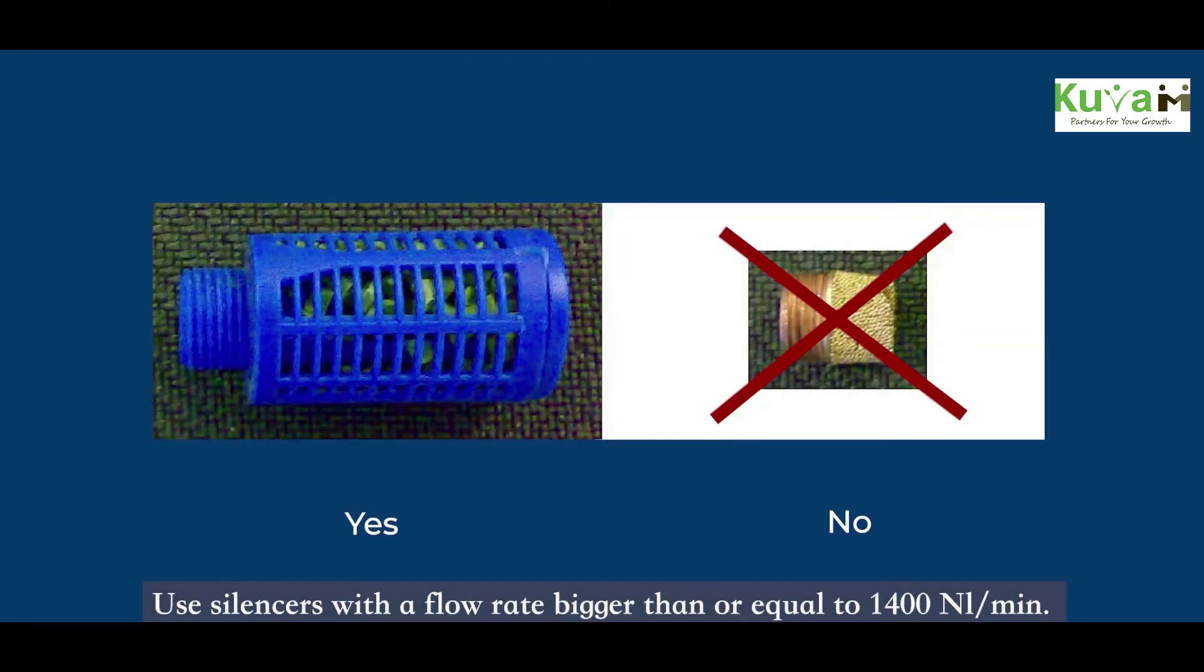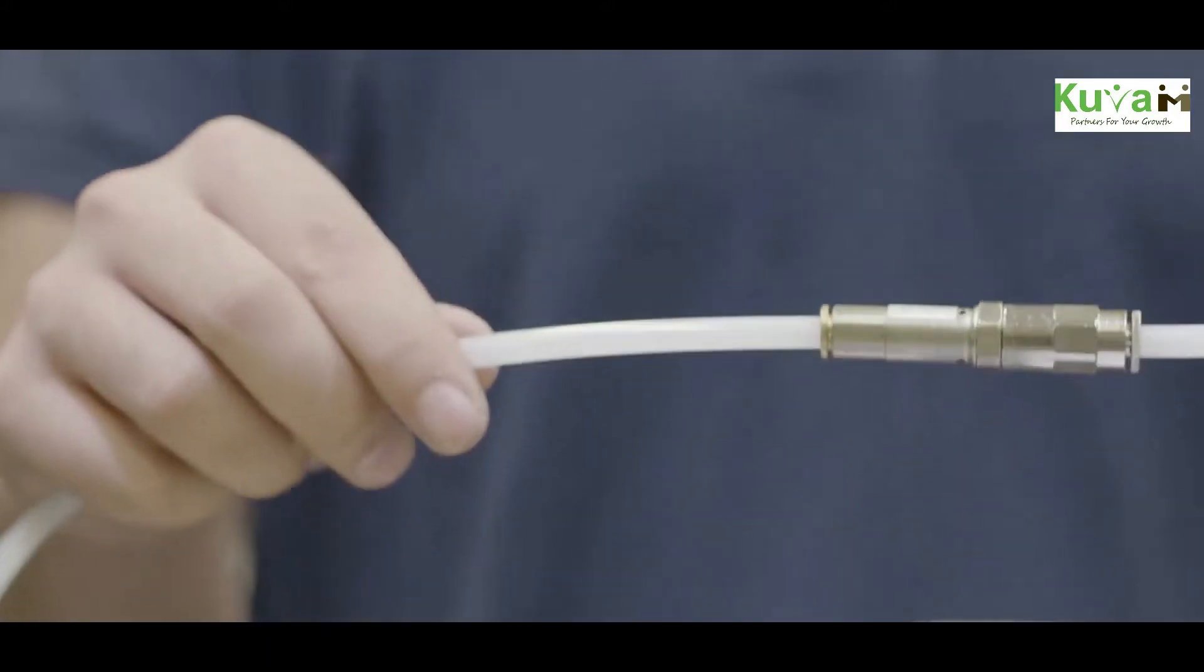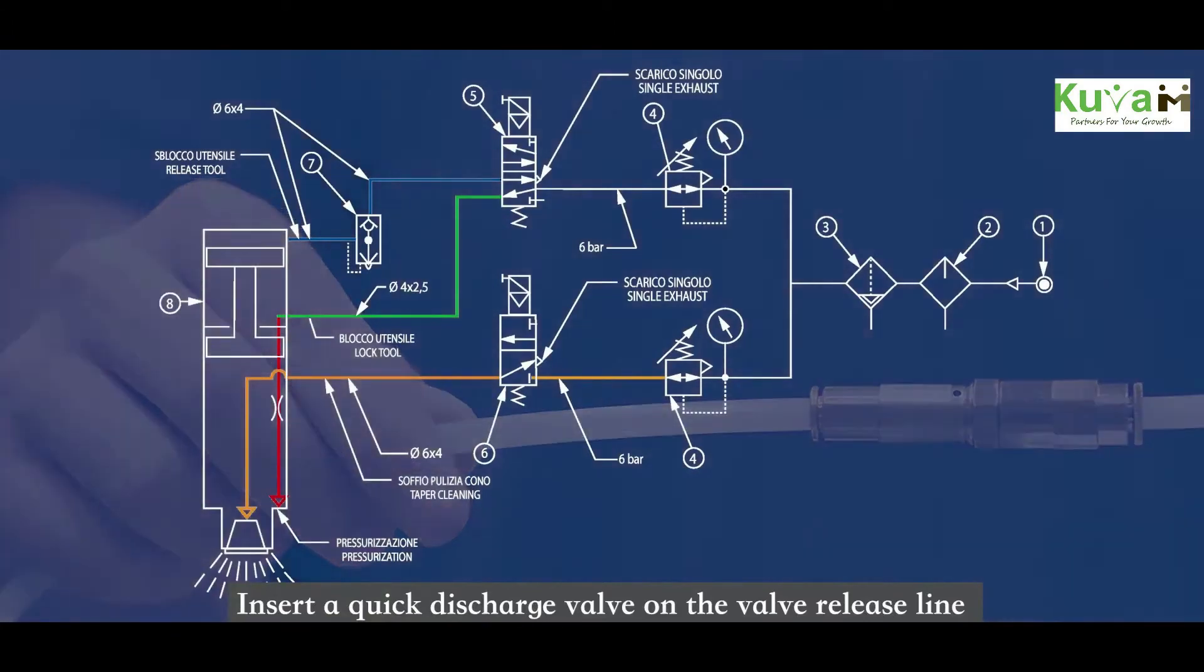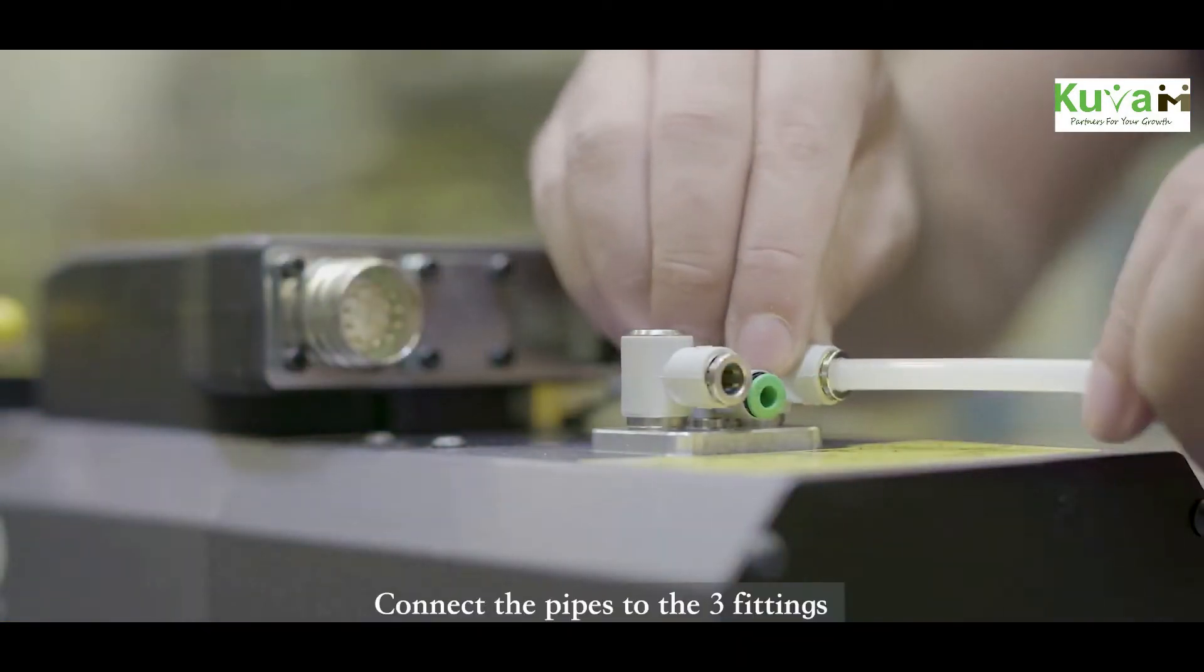Use silencers with a flow rate bigger than or equal to 1,401 per minute. Avoid using silencers in sintered bronze. Insert a quick discharge valve on the valve release line to increase the upstroke speed of the piston during the lock phase. Connect the pipes to the three fittings.